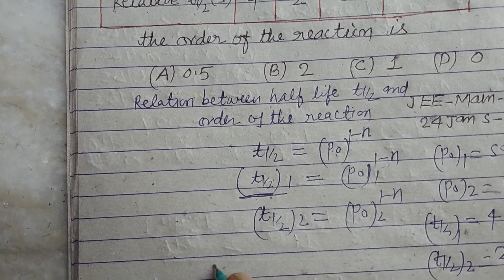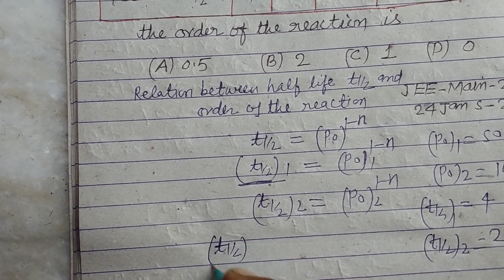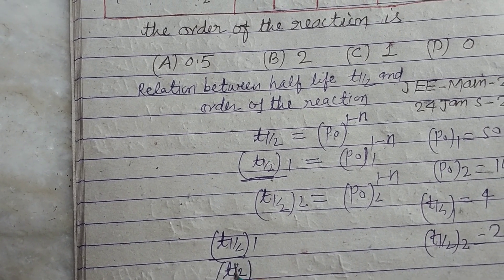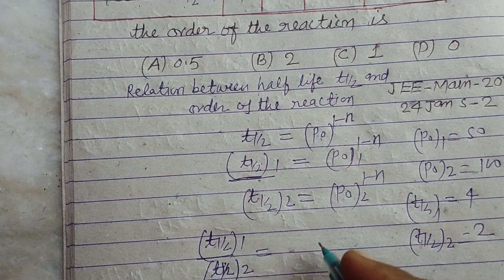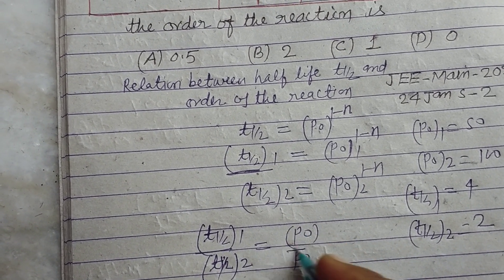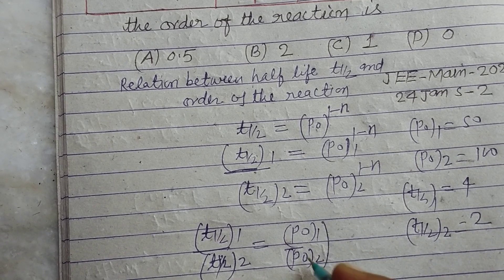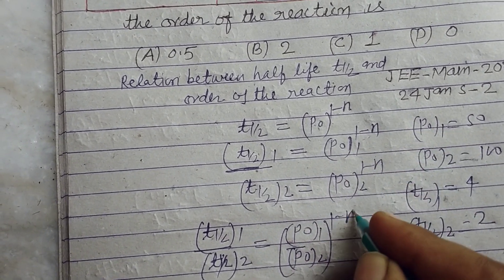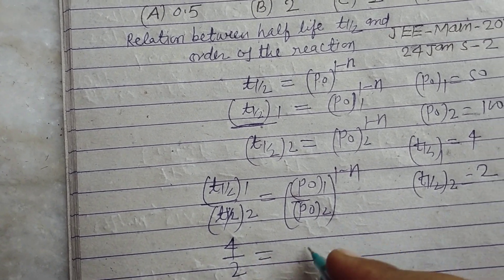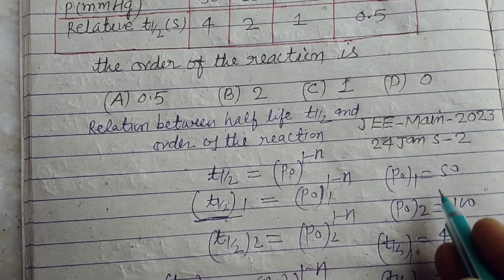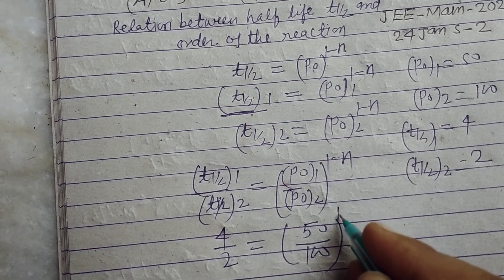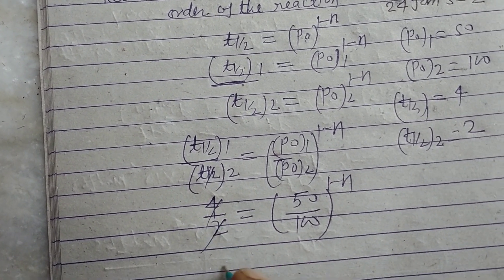So dividing, T1/2 one upon T1/2 two equal to P0 one upon P0 two to the power 1 minus n. Putting these values, 4 upon 2 equal to 50 upon 100 to the power 1 minus n. This is 2, and this is 1 by 2 to the power 1 minus n.